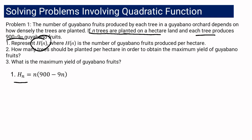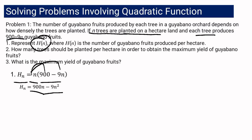H of N will be equal to N multiplied by 900 minus 9n. It is because N is the number of trees, and 900 minus 9n is the number of fruits. To identify the number of fruits yielded per hectare, we need to multiply the fruits per tree by the number of trees. So H of N equals N times (900 minus 9n), and we simplify using the distributive property: N times 900 is 900n, and N times negative 9n is negative 9n squared.